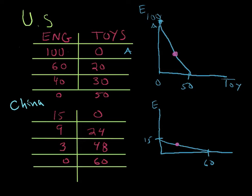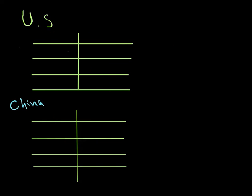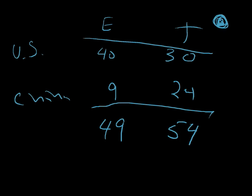Now we're going to move forward and show what happens when we have trade. Remember before trade we ended up with the US producing 40 engineering, 30 toys, China 9 engineering, 24 toys. You add them up and you get 49 engineering and 54 toys being produced in the world.